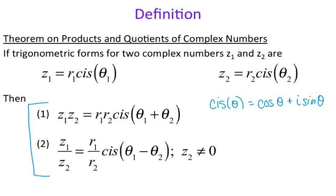Going to the formulas: if I want to multiply two complex numbers, I start by multiplying their r's together and add the angles together, then evaluate cosine plus i sine. If I am finding the quotient, I divide my r's and subtract my angles, then evaluate cosine theta plus i sine of theta.